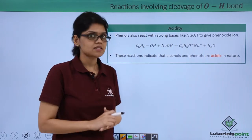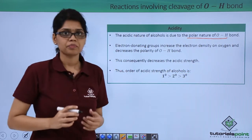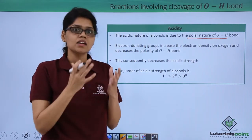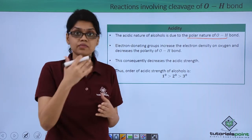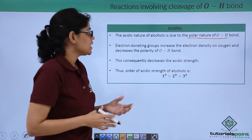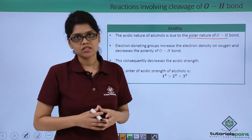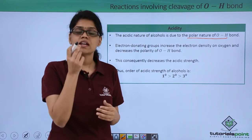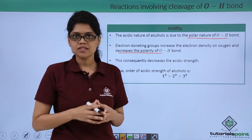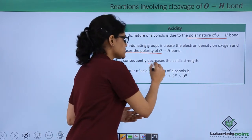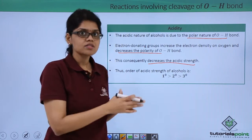Now, why are they acidic? The acidic nature of alcohols and phenols is mainly due to the polar nature of the OH bond — the polarity of the OH bond essentially determines why a particular alcohol or phenol is acidic. Due to the presence of electron-donating groups on alcohol, there is an increase in electron density on the oxygen atom, which decreases the polarity of the OH bond. If the polarity of the OH bond is decreased, consequently the acidic strength also decreases, because the bond does not have the tendency to break easily and liberate H⁺.